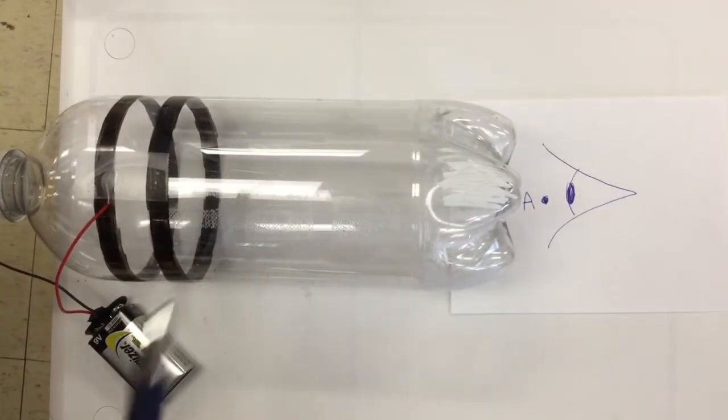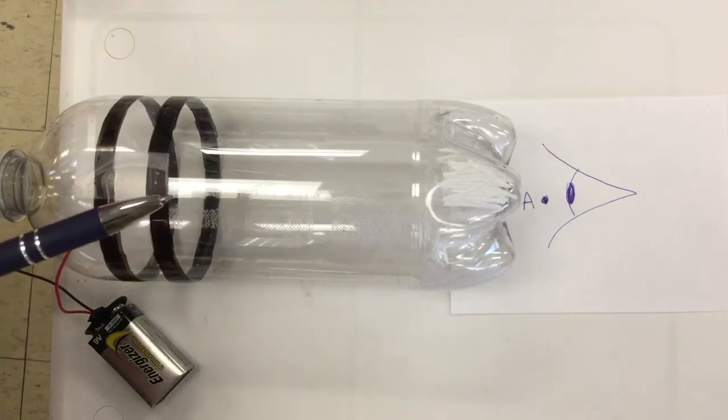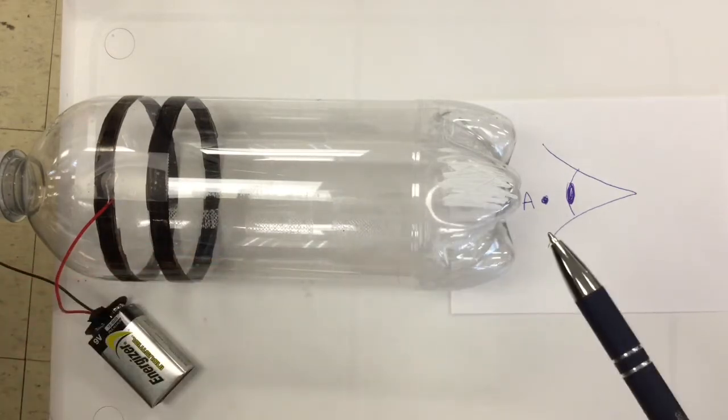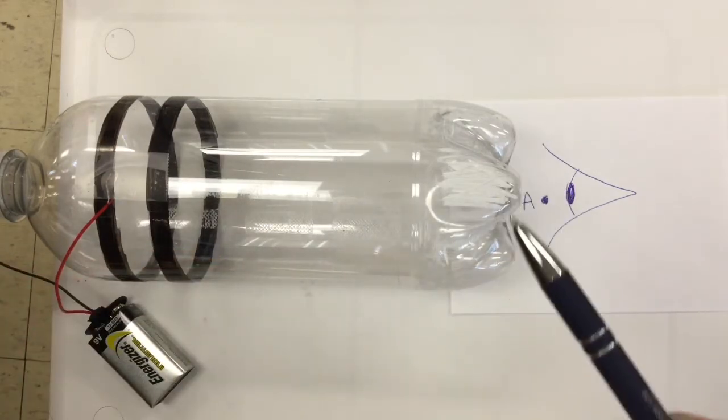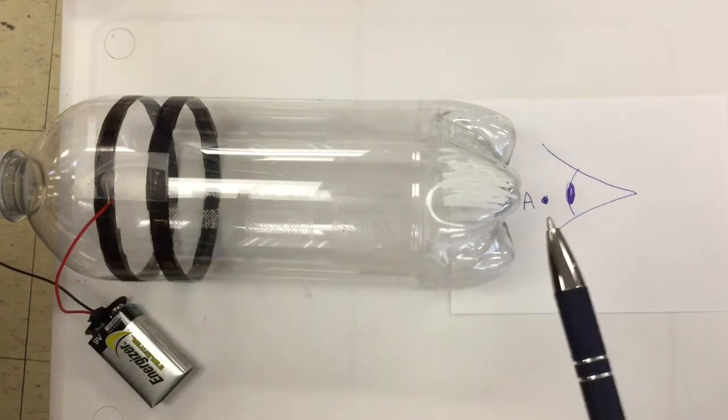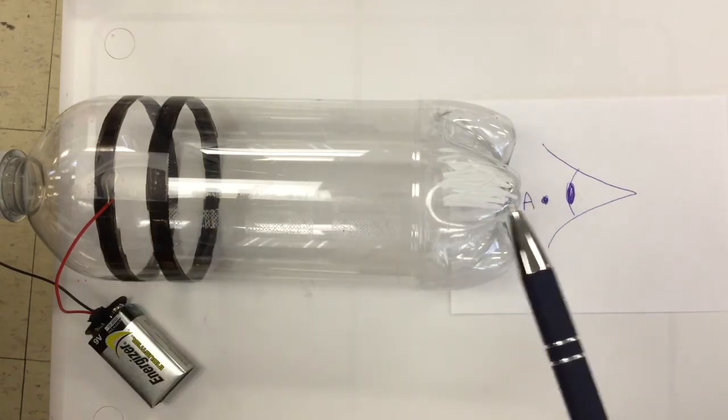He observed a beam that was glowing through the bottle and hit the end of this fluorescent coating. It went straight and he marked it at point A.